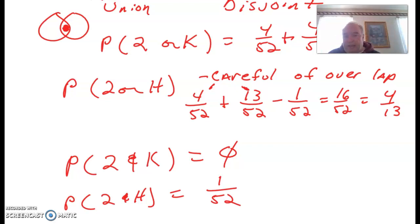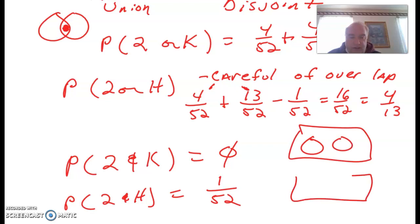Remember, again, thinking of disjoint versus overlapping. If they're not mutually exclusive, then they're disjoint, and there's no likelihood. That's this scenario. This scenario, we have the overlap, so it can occur.